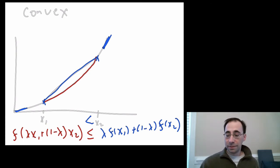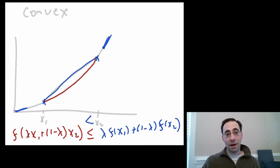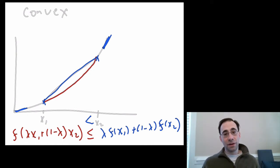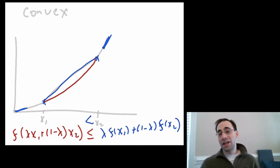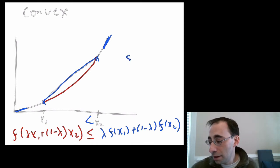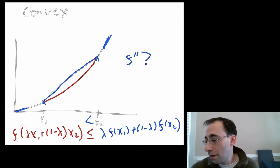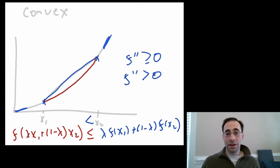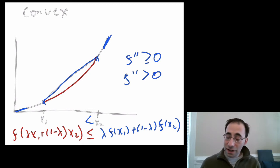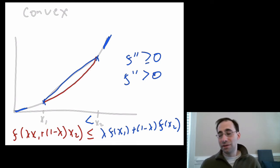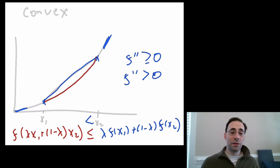Just like for concave functions, you can use the second derivative for convex functions. If the slope starts off lower and gets greater, the slope is increasing — that's the first derivative increasing, which means it has a positive slope, meaning the second derivative is positive. So for a convex function, the second derivative is non-negative. For a strictly convex function, the second derivative is strictly positive.